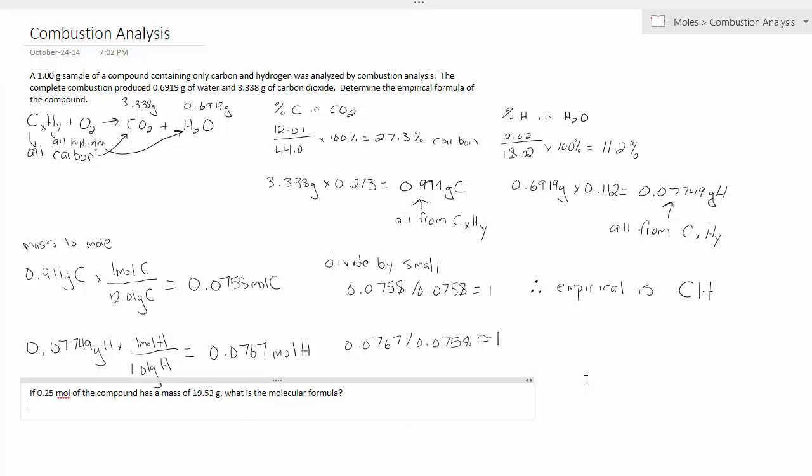Now I'm going to add a part B to this question. The empirical formula was the answer to the original question. Now I'm going to say if 0.25 moles of the compound has a mass of 19.53 grams, what is the molecular formula? Remember, the molar mass is grams per mole. Notice that in this part B of the question, I've given you a mole value and a grams value. So if I divide grams by moles, this will give me the standardized unit of molar mass. 19.53 grams divided by 0.25 moles is equal to 78.12 grams per mole.